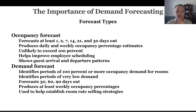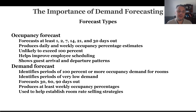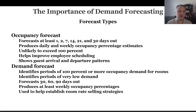What kinds of forecast types do we do in the lodging industry? From occupancy forecasting, we like to forecast at least 1, 2, 7, 14, 21, and 30 days out. If possible, produce daily and weekly occupancy percentage estimates. It's unlikely to exceed 100%, but as I mentioned, sometimes it does. This helps improve employee scheduling and shows guest arrival and departure patterns, which vary by location.